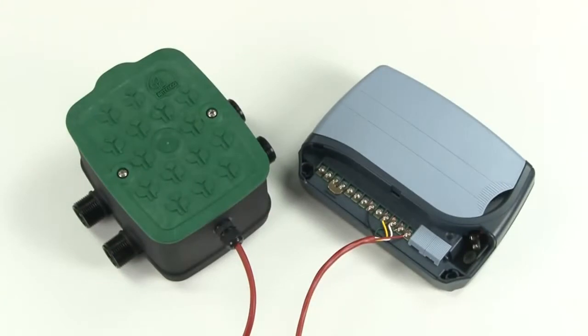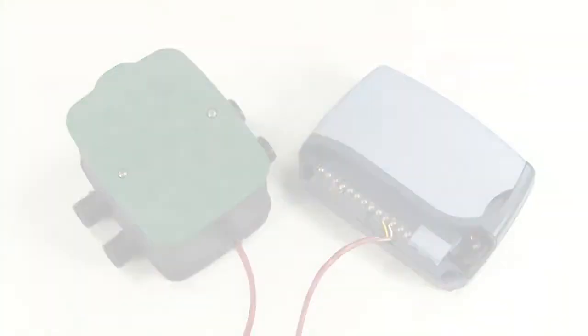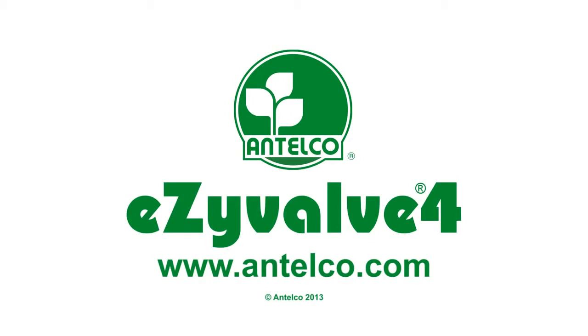This completes the wiring instructions for your EasyValve 4. Further information on water connections and irrigation components can be found on the ANTELCO website at www.antelco.com.